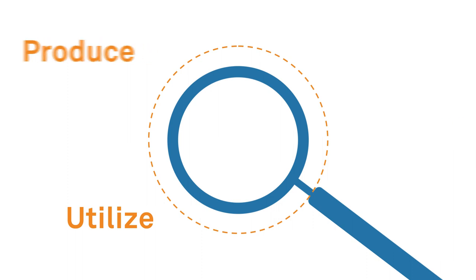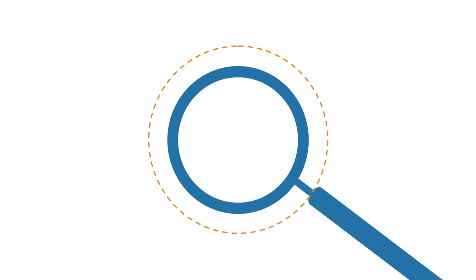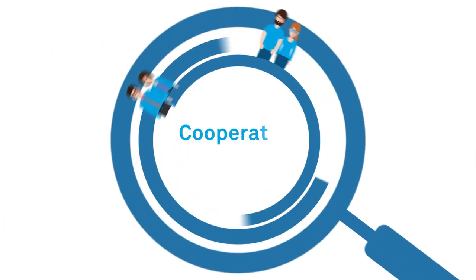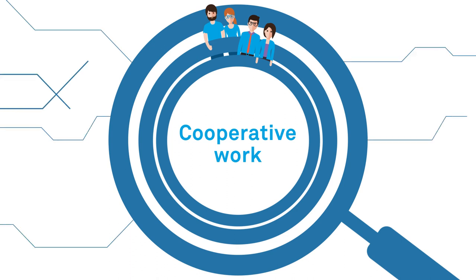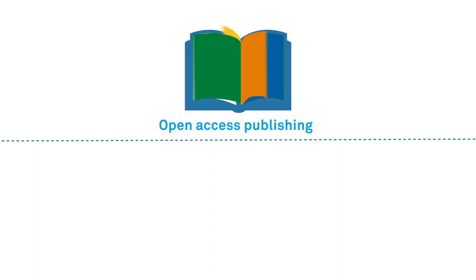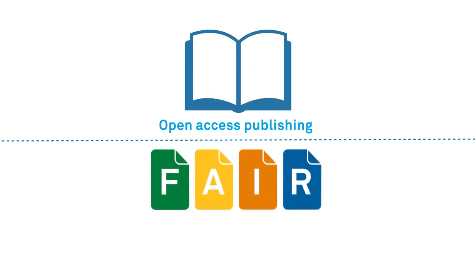It represents a new approach to the scientific process based on cooperative work and novel ways of spreading knowledge through the use of digital technologies and new collaborative tools. To practice open science, researchers must adhere to two guiding principles: open access publishing and fair data.